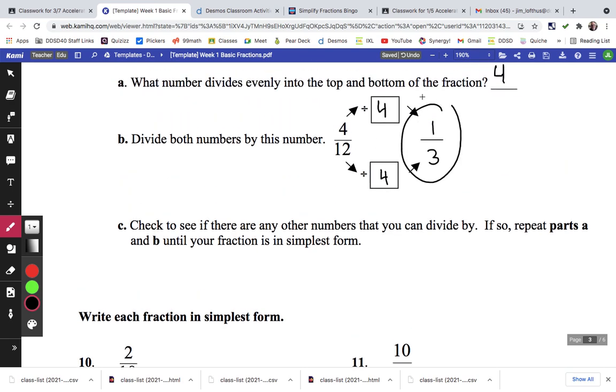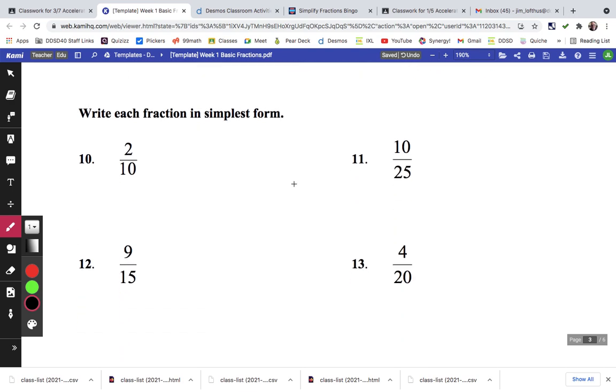I believe that 1 third is the simplest. So put each of these in simplest form. I'm going to do the prime factorization method. That's 2 times 5. We have a 1 here, so that's 1 fifth. This is going to be 2 times 5, and 5 times 5 does cancel out. So that's equal to 2 fifths.